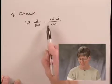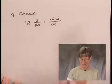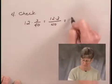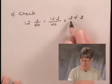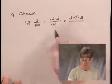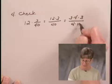So I'm going to write 12 as 3 times 4. And then I have another factor of 3 in the numerator. And I'm going to write 40 as 4 times 10.